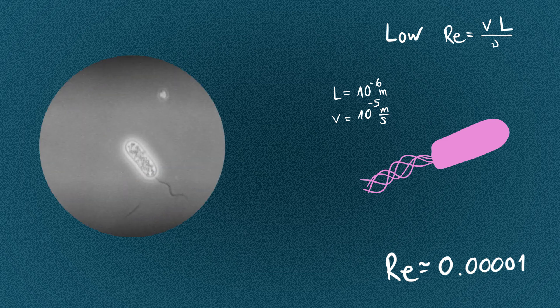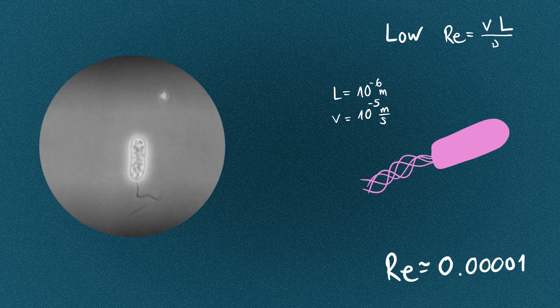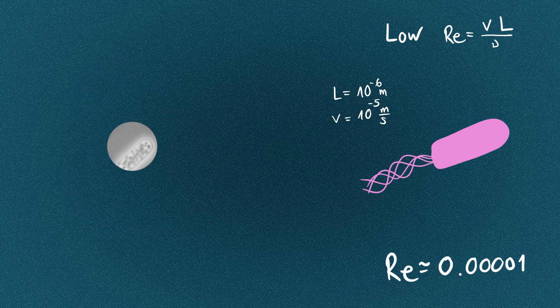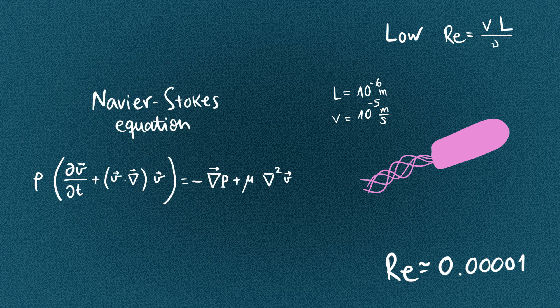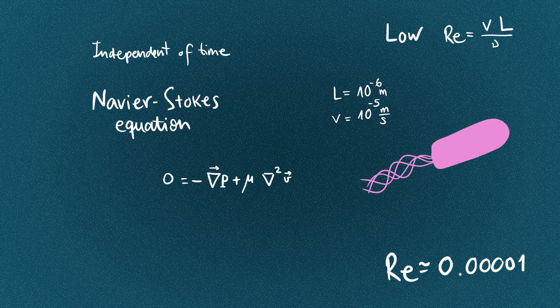In this case, viscous forces dominate, and the moment the bacterium stops moving, it halts immediately. So the bacterium can't take a break. If that wasn't enough, in this microscopic world the Navier-Stokes equation becomes time-independent.